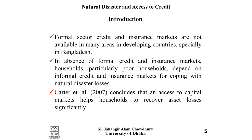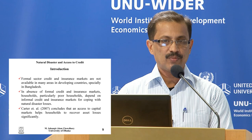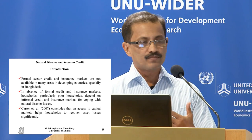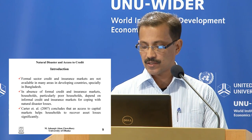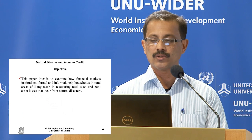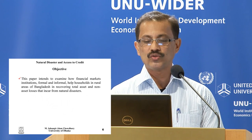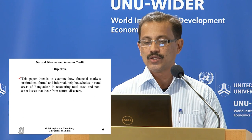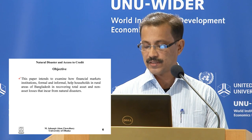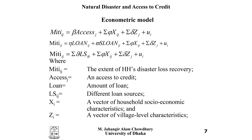Looking at the literature on the impact of access to credit on recovery of disaster losses, there is very little available — only one paper by Carter et al. (2007), which looked at the impact of access to credit on household asset losses only, without considering non-asset losses. This paper intends to examine how financial market institutions, both formal and informal, help rural households in Bangladesh recover total asset and non-asset losses from natural disasters.